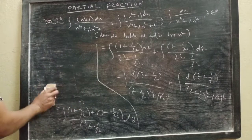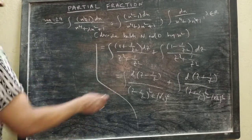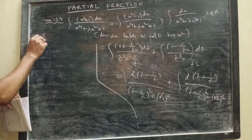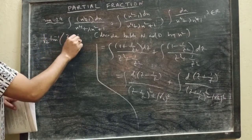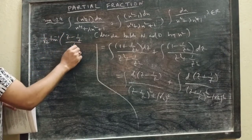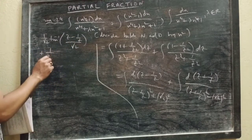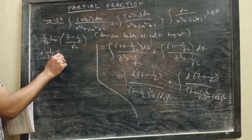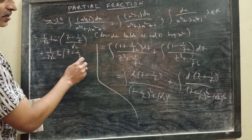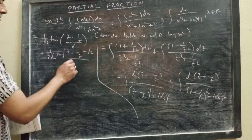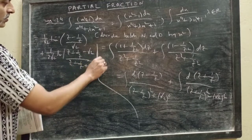Now they are integrable. You can write here: (1/√2) tan⁻¹((z − 1/z)/√2) plus, here it will be (1/(2√2)) ln|( z + 1/z − √2) / (z + 1/z + √2)| + C.